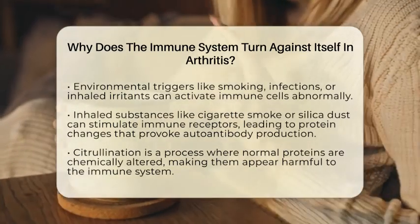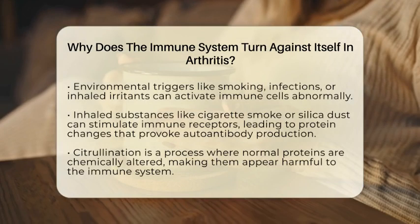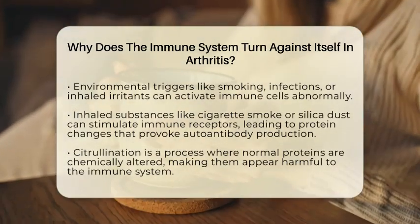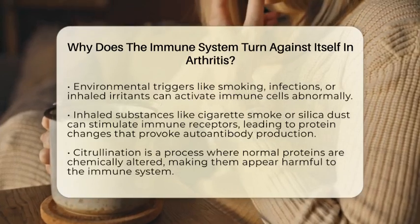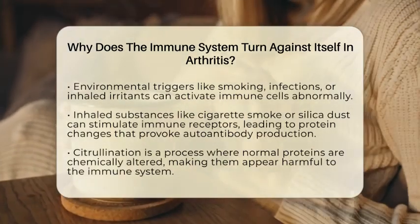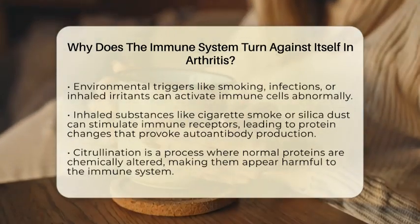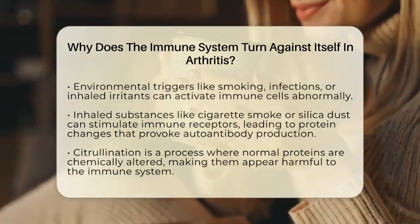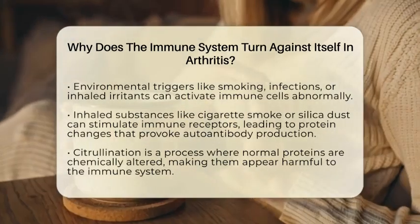Environmental triggers also matter a lot. Things like smoking, infections, or inhaled irritants can activate immune cells abnormally. For example, breathing in cigarette smoke or silica dust can stimulate immune receptors and enzymes that change proteins in a way that makes the immune system see them as threats, leading to the production of autoantibodies that attack joint tissues.